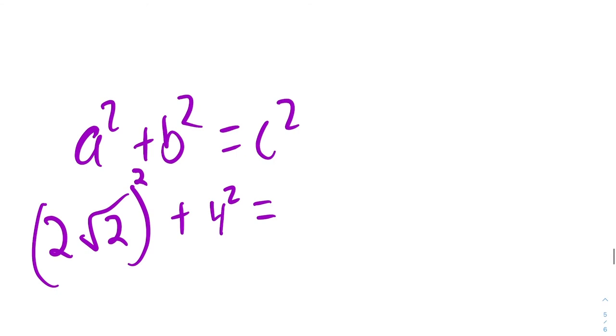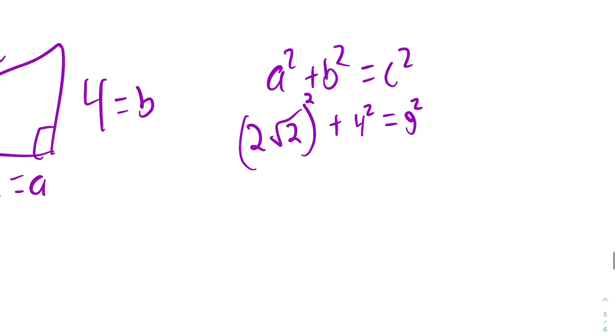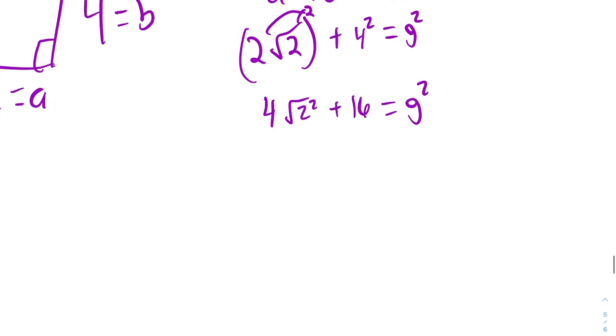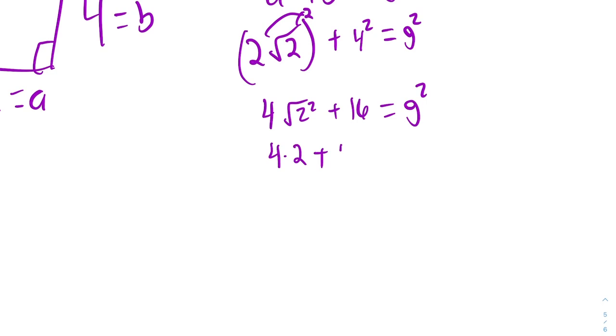2 square root 2 squared. So what you could do is you could distribute this exponent to each one. I told you there's multiple ways to do it in that other video. This is one of the ways. 2 squared times square root 2 squared equals G squared. 4 times the square root of 2 squared is 2 plus 16 equals G squared. 8 plus 16 equals G squared. 24 equals G squared.